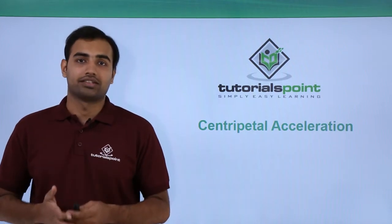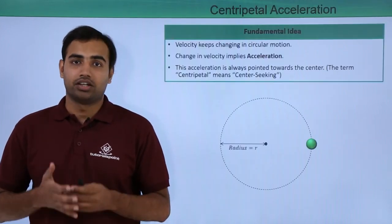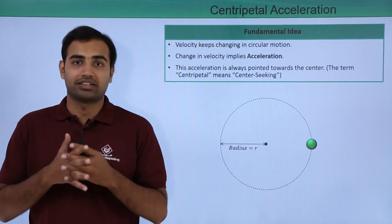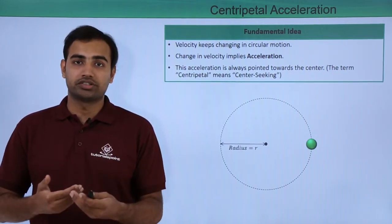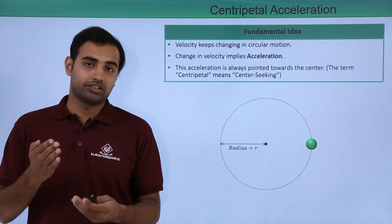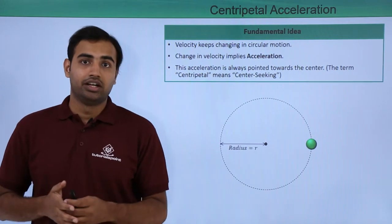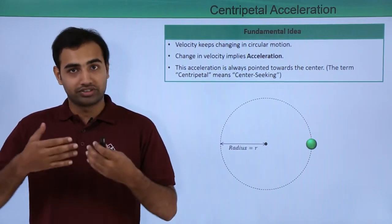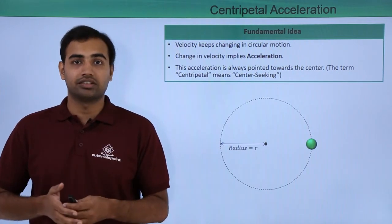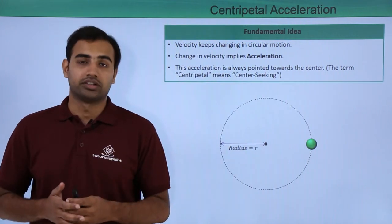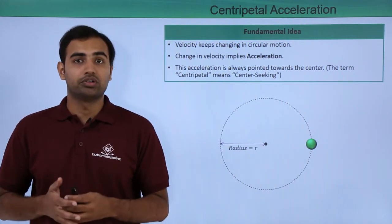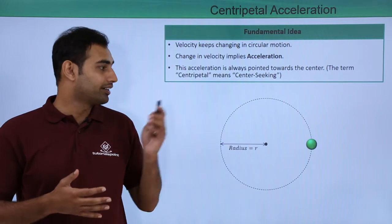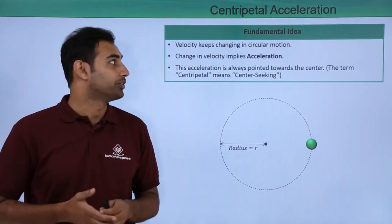Let's talk about centripetal acceleration. In the previous video, we gave some hint about what centripetal acceleration is. It comes into picture because the direction of velocity constantly changes. In this video, we will try to derive a relationship for centripetal acceleration and we will also try to visualize it. But before we do that, let's try and reiterate the idea that we discussed in the last video.